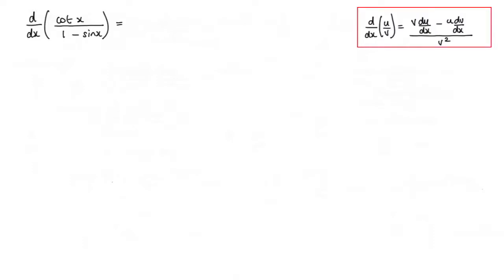In this question, we're asked to find the differential of cot x over 1 minus sin x. Now because this is a quotient, we can use the quotient rule.